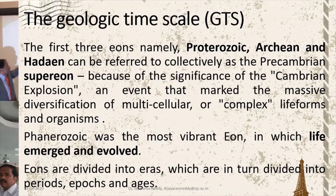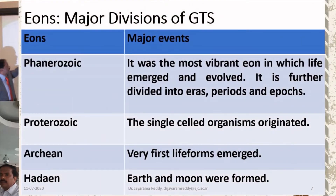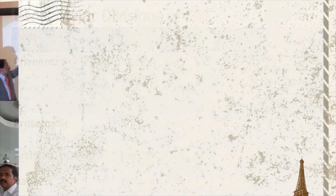It is in this period that the massive explosion of origin of species and diversification occurred. As you can see in the table, there are four eons. The oldest is Hadean, in which Earth and Moon were formed. In Archean, the very first life forms emerged. In Proterozoic, single-celled organisms originated. Phanerozoic is the most vibrant eon, where origin and evolution of most organisms occurred, and it is further divided into eras, periods, epochs, and ages. This is a broad classification of the geological time scale.